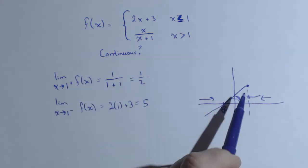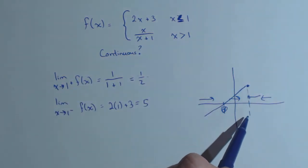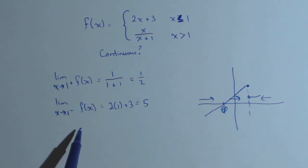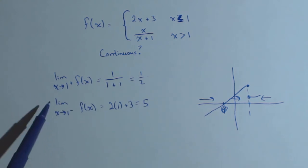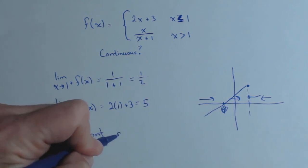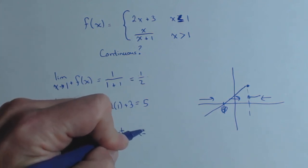We can see graphically we'll have a discontinuity there at 1. These limits have to be equal and defined at 1 for this to be continuous at 1. So this function is not continuous at x equals 1.